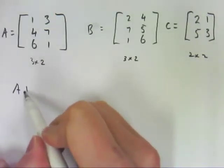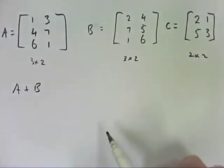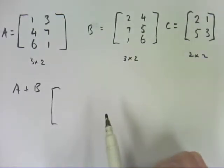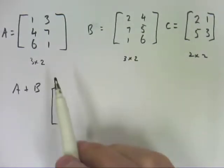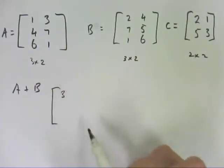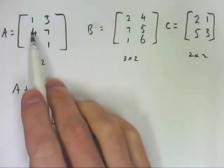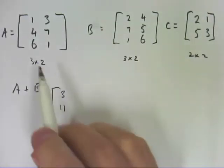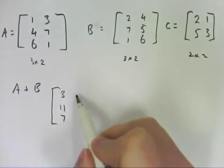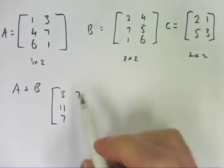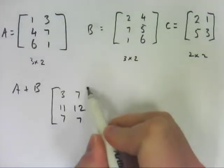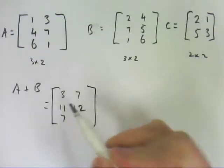So if I were to do A plus B, all you do is you add each individual element in the matrix. So we'll add 1 and 2 will give us that one, which is 3. 4 and 7 will give us this one. 6 and 1 will give us that one. 3 and 4 there. 7 and 5 and 1 and 6. So that is what A plus B equals.